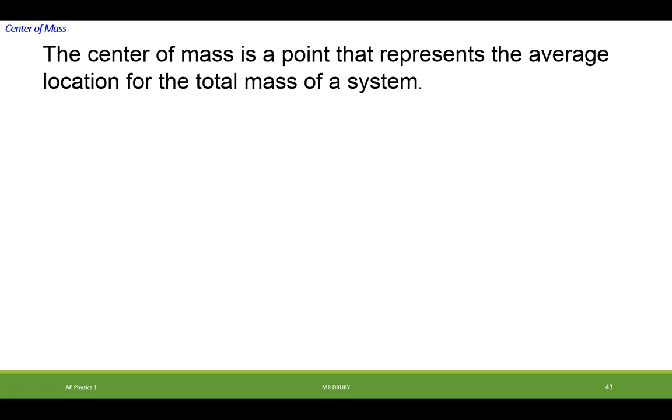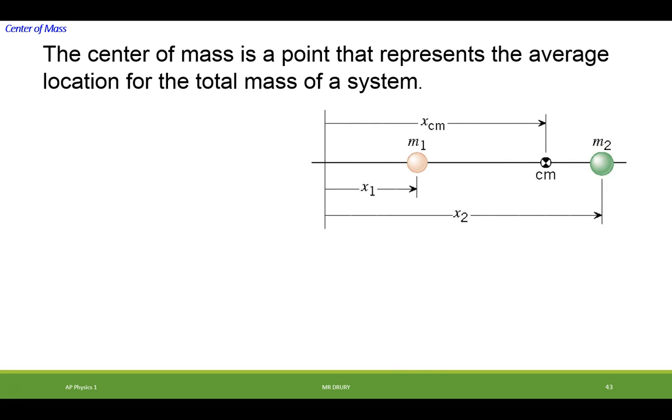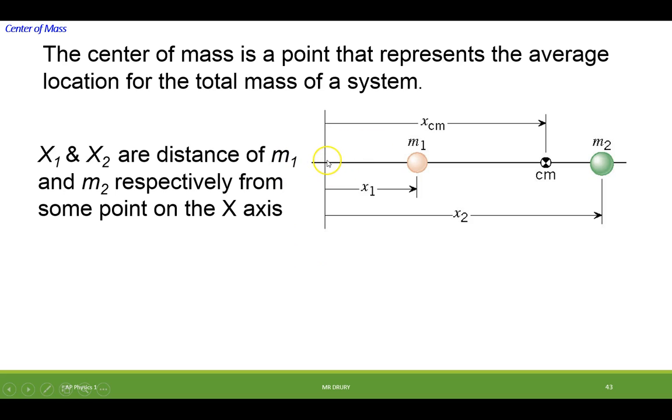The center of mass is a point that represents the average location of the total mass of a system. So let's say we have a two mass system, m1 and m2. And we have some arbitrary reference point that I've chosen right here. m1 is x1 distance away from the arbitrary point. m2 is x2 distance away from the arbitrary point. Now, where would I have to put all the mass, these two added together, how far out or where would I have to locate it to be the same as this mass out this distance and this mass out this distance?